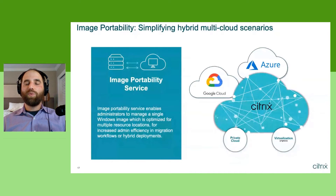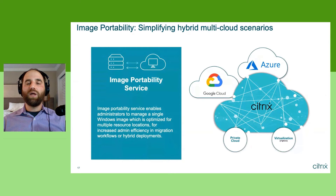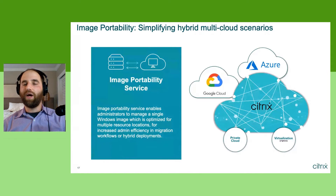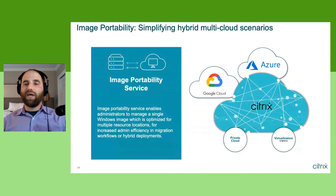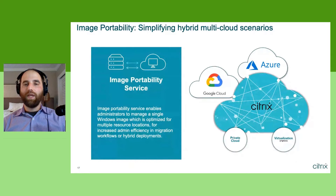The image portability service addresses a key IT admin goal: a single source of truth and reduced golden image sprawl. Managing separate images on-premises, in Google Cloud, and in Azure increases complexity exponentially. With the image portability service, you manage a single golden image and provision it across multiple public cloud providers and on-premises, seamlessly handling the overall lifecycle. We encourage you to check it out and see how it fits your existing workflows.